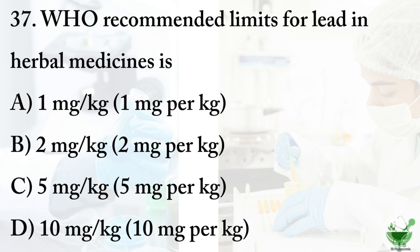Question 37: The WHO recommended limit for lead in herbal medicines is — option A: 1 mg/kg, option B: 2 mg/kg, option C: 5 mg/kg, option D: 10 mg/kg. The correct option is D, 10 mg/kg.